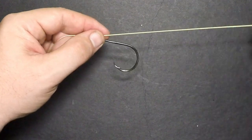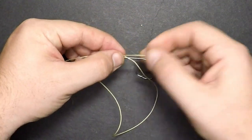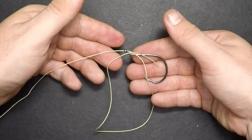To tie this knot, thread a healthy amount of line through the eye of the hook and lay the tag in parallel to the shank like this to form a large loop.